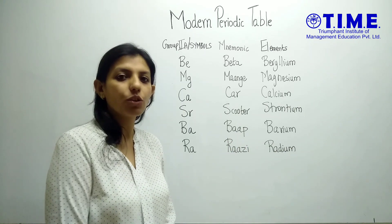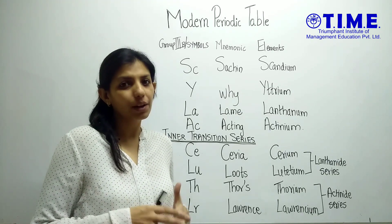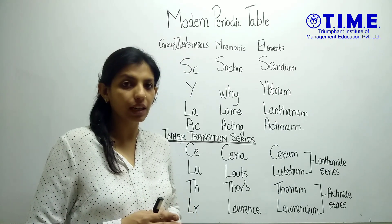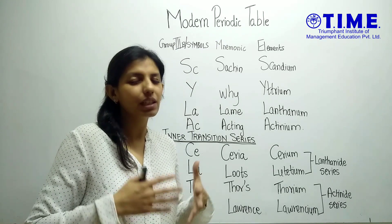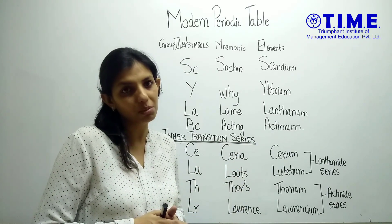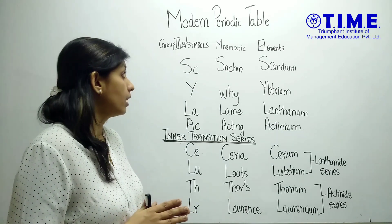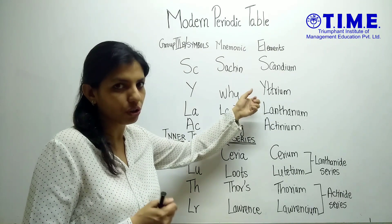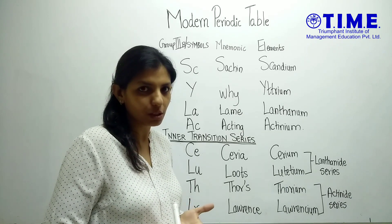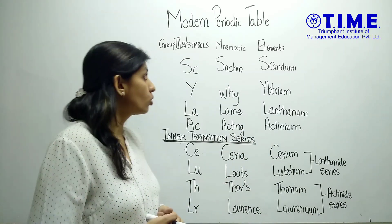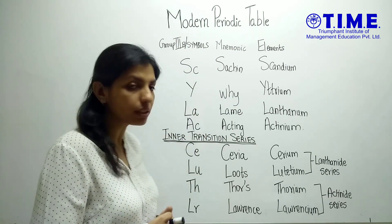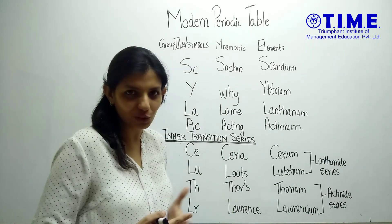Now let's look at Group 3B. I know I said we would not look at the transition series, but this is the beginning of the transition series and it helps you understand where the inner transition series starts. The elements are scandium, yttrium — I'm not sure of the pronunciation but let's take it as 'vitrium' so we also remember the spelling — lanthanum and actinium. The mnemonic goes like this: 'Sc in Y lame acting.' The name of Sachin — our god — also features here, so I'm sure you'll remember this.